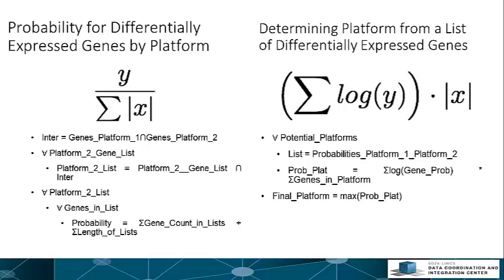The probability for each remaining gene from the second platform is calculated. The equation counts the total number of times the chosen gene appears in the chosen gene sets, which is Y, and divides this by the sum of the lengths of these same gene sets, which is the sum of X. These probabilities are then placed into a table for further reference.